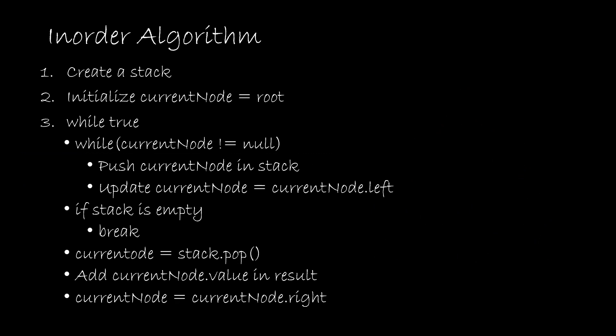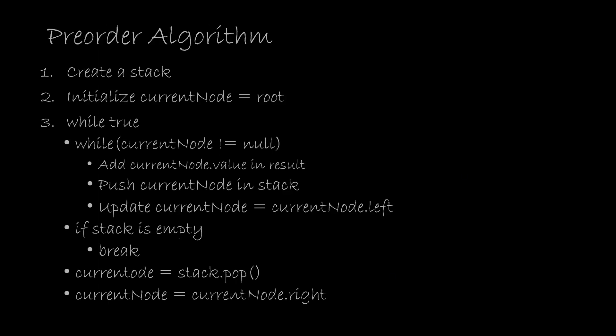This is our in-order traversal for the tree. The algorithm is as follows: we create an empty stack and initialize the current node to root. Then we start the indefinite while loop. Inside, we loop while the current node is not null, pushing the current node to the stack and updating current to its left. Once that inner loop finishes, we check if the stack is empty — if so, we break. Otherwise, we pop the top node from the stack, add its value to the result, and update current to its right. For pre-order, we just need to change one line: we shift the logic to add the current node's value to result before we push the node into the stack. The rest of the steps are exactly the same.